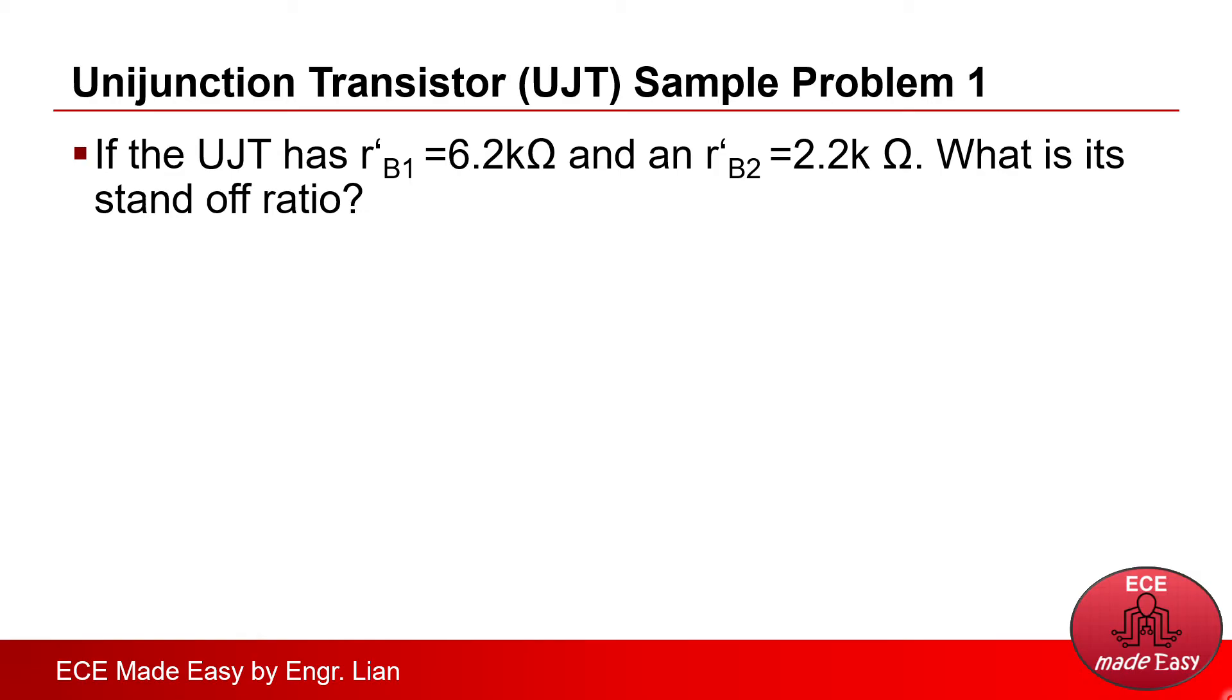Okay, problem number 1. If the UJT has RB1 of 6.2 kOhms and an RB2 of 2.2 kOhms, what is its standoff ratio?